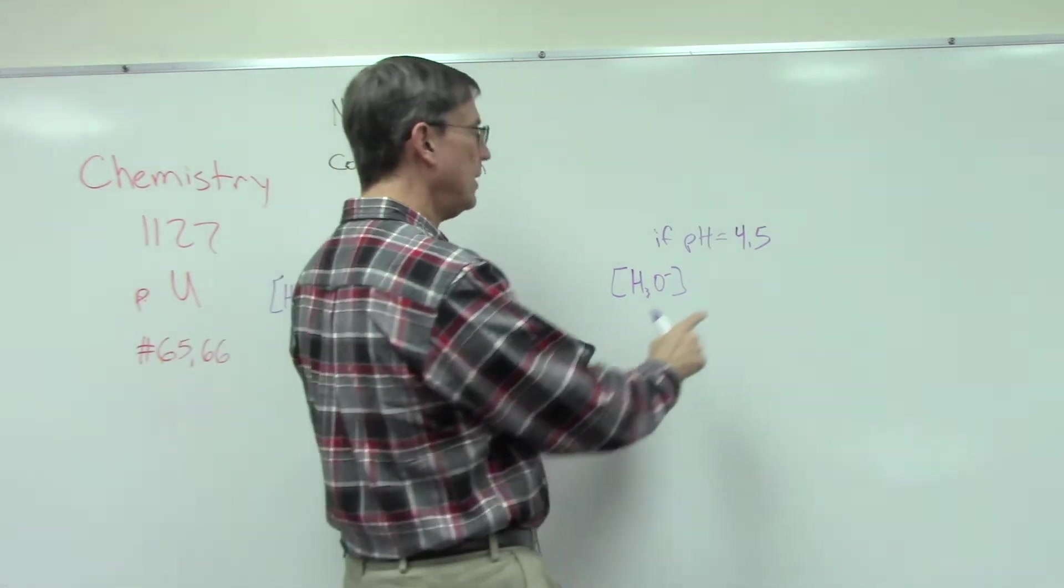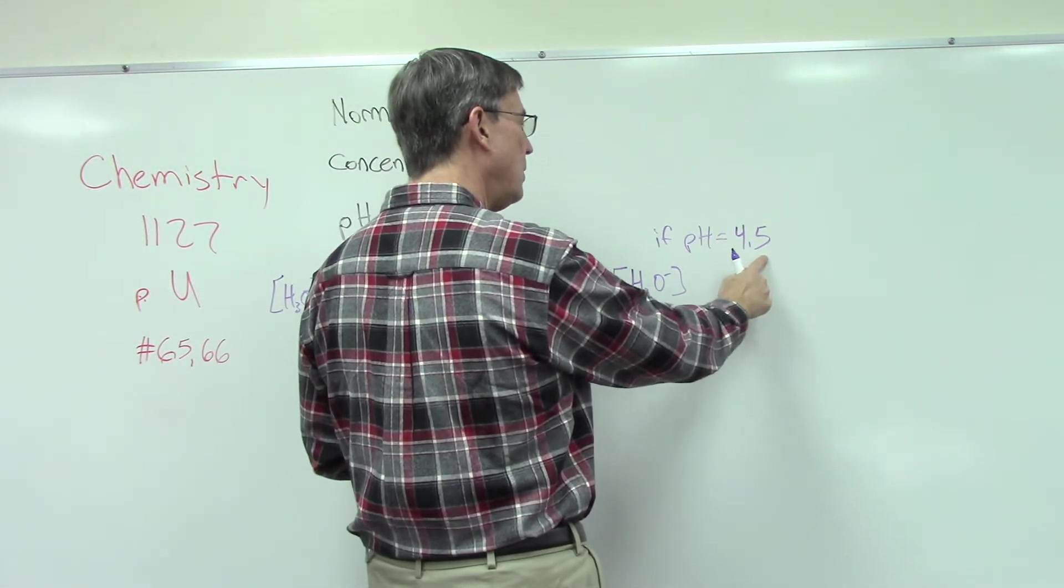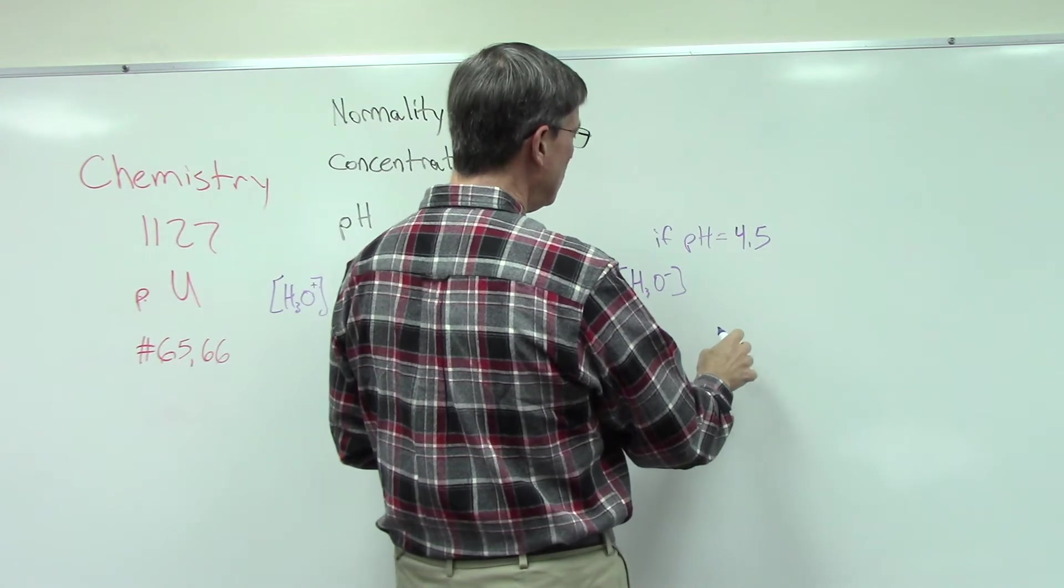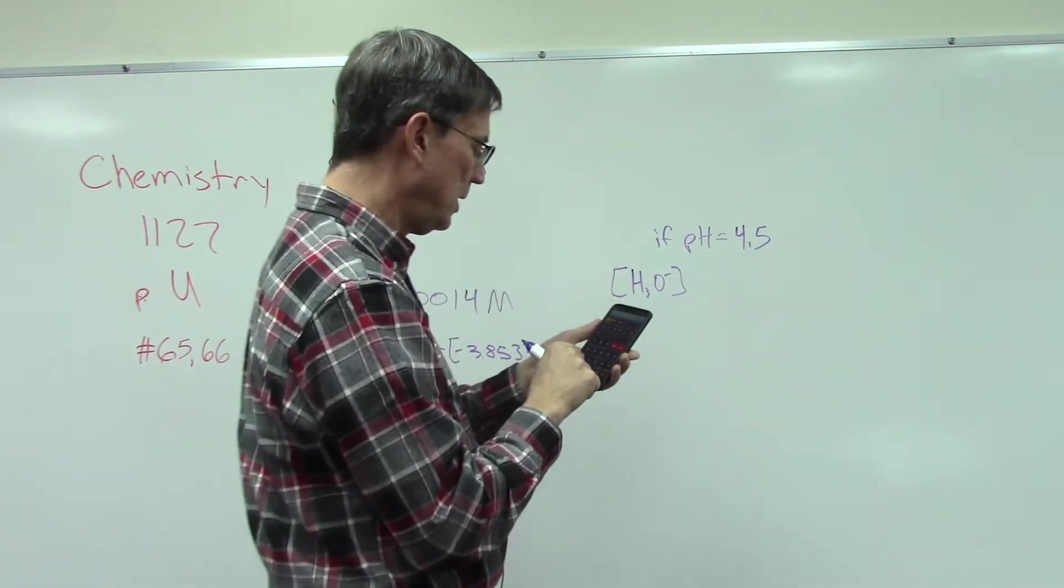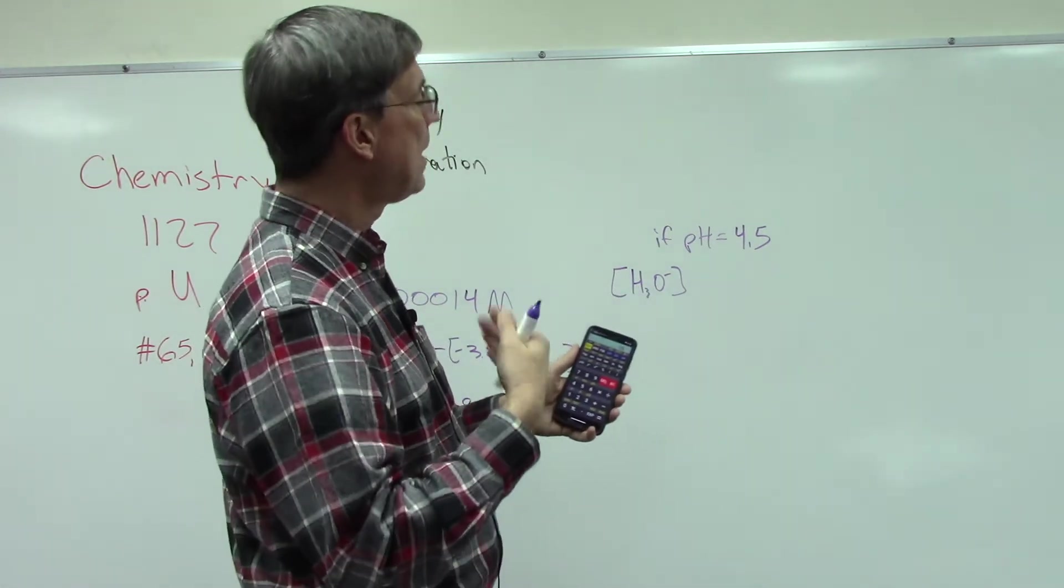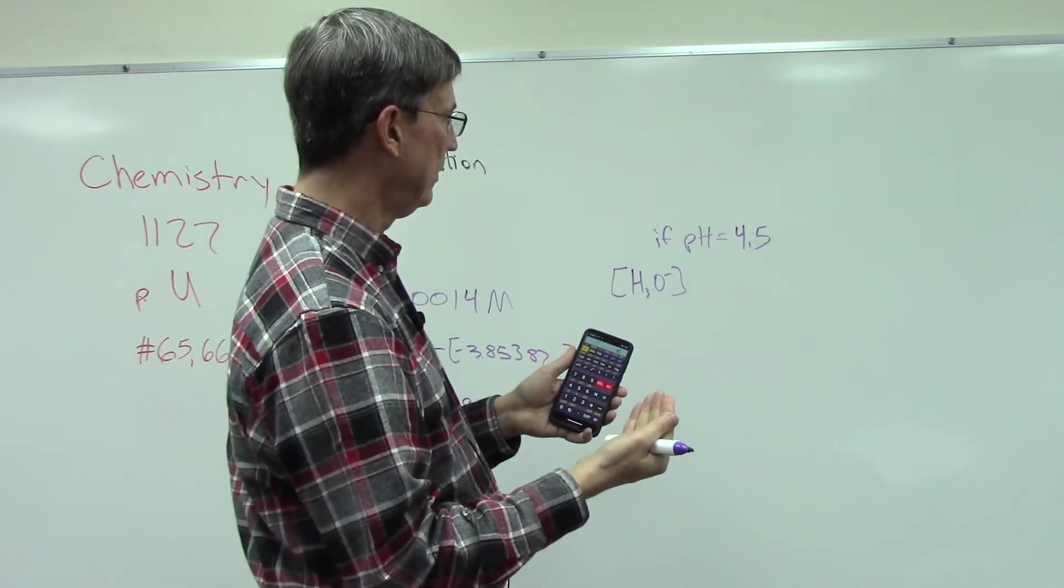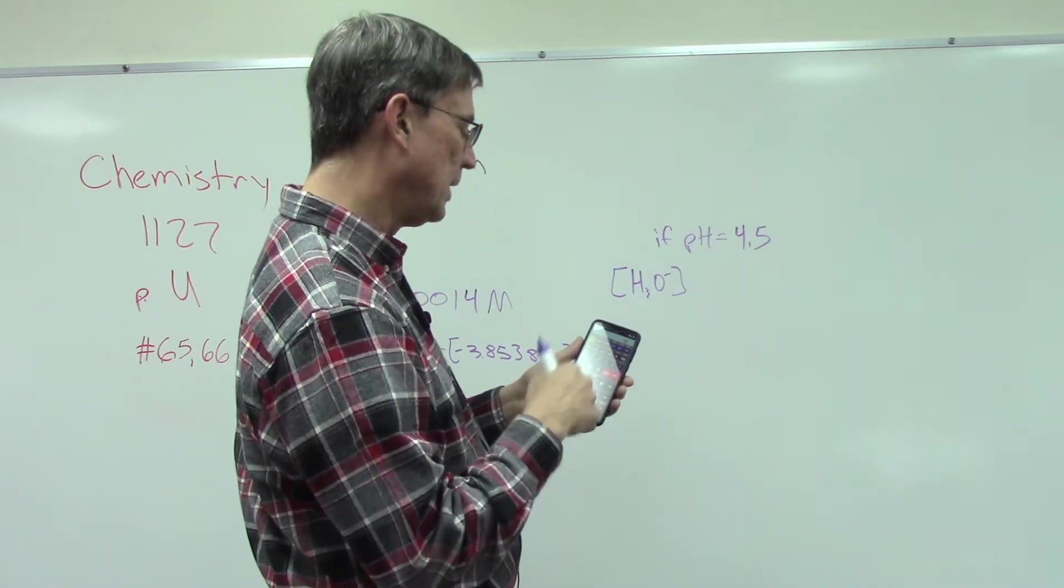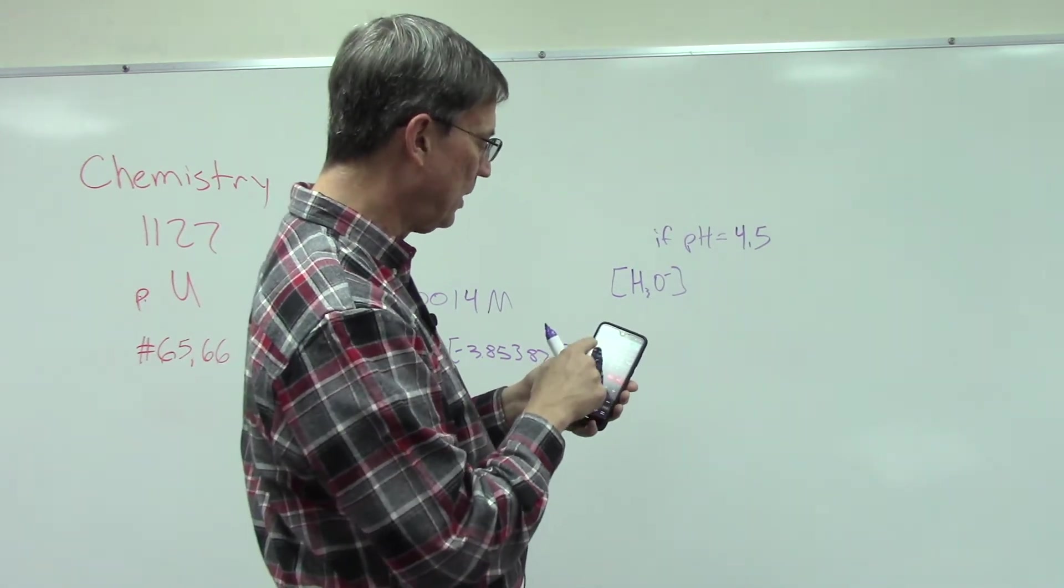What if we go the other direction - what if they give us the pH and we're supposed to find the concentration? We're going to hit 4.5 and on my calculator I hit the negative after I do the 4.5. Some calculators you do the negative first and then the 4.5. Now I'm going to hit shift log.